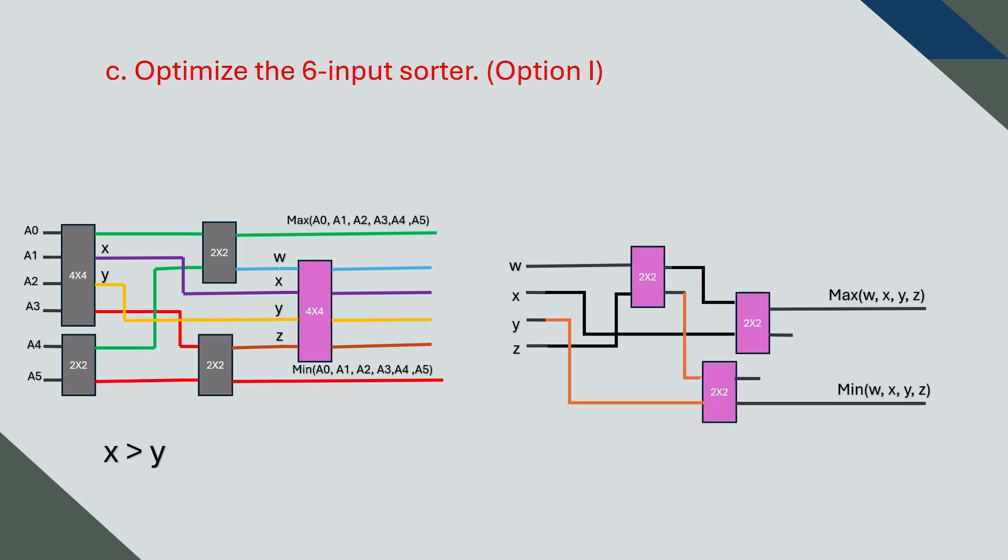Similarly, we take the smaller of w and z and feed it into the two-on-two sorter with y which we know is the lowest among its pair. This gives us the minimum value of the four inputs.